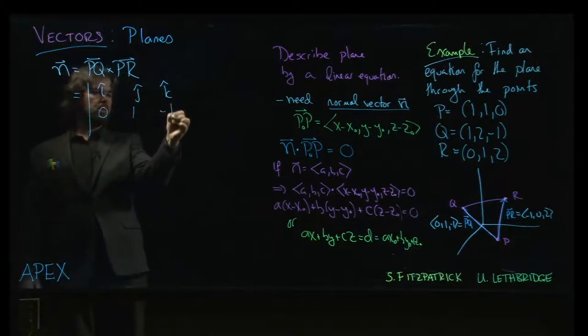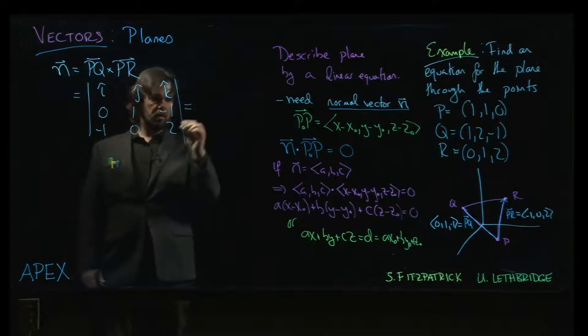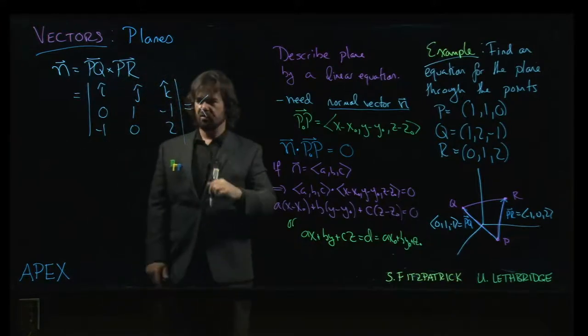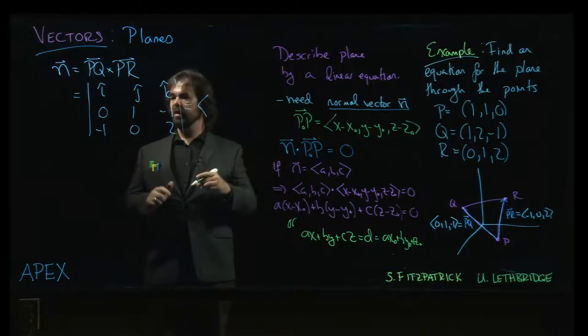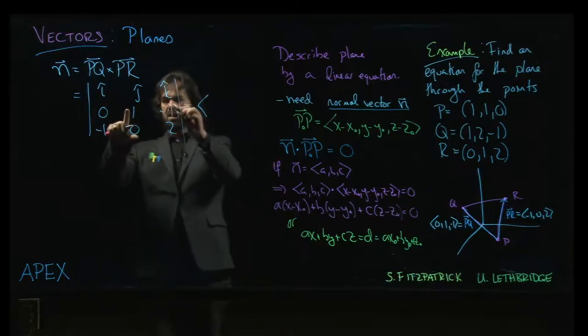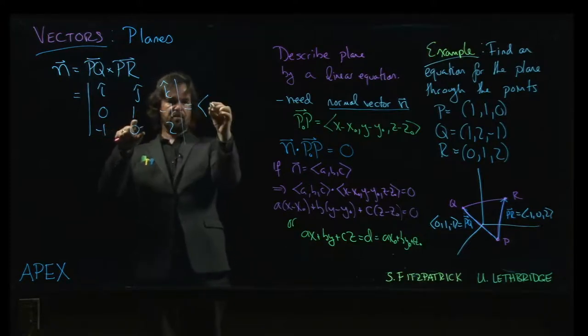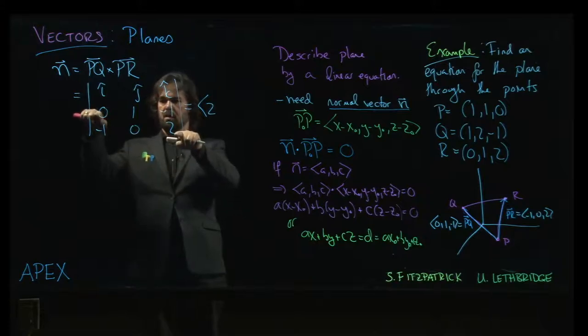Zero, one, minus one, and then minus one, zero, two. And we work this all out. We've been doing these cross products for a while now, maybe I'll jump the intermediate steps, but remember for I, we do this two by two here, so it's going to be two minus zero, two. For J, it's going to be zero subtract one, which is one, but J comes with the minus sign.